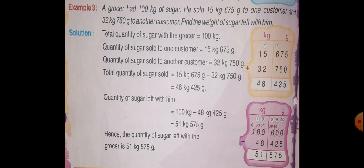Then, in step 2, quantity of sugar left is equal to total quantity of sugar with the grocer minus quantity of sugar sold. So, 100 kg minus 48 kg 425 g. First, write in column of kg and gram. Under kg column, write 100 and gram column 3 0s.